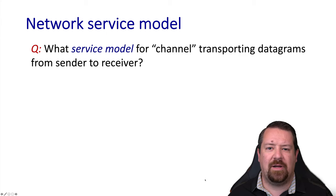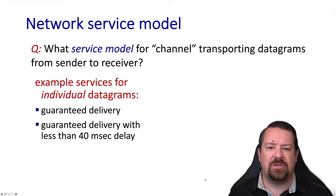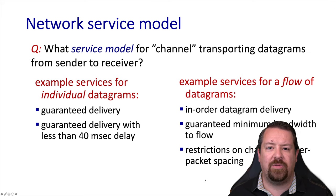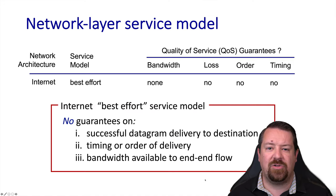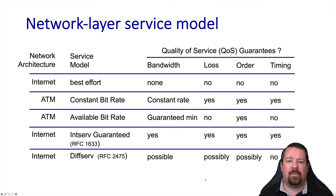Now let's talk about our service model for the network layer. It's important to note that historically there have been different network layers. While IP is certainly the most common one today, it was not always so, and different network layers offered different service models. Some examples of these services might be guaranteed delivery, or guaranteed delivery with an upper delay bound. We could also consider in-order delivery of datagrams, guaranteed minimum bandwidth, and restrictions on acceptable jitter. However, the service model offered by the internet is a best effort model, meaning it makes no guarantees on bandwidth, loss, order, or timing, so higher layers of the network stack are responsible for dealing with any issues that arise. In contrast, network layers like ATM were able to offer these sorts of guarantees.